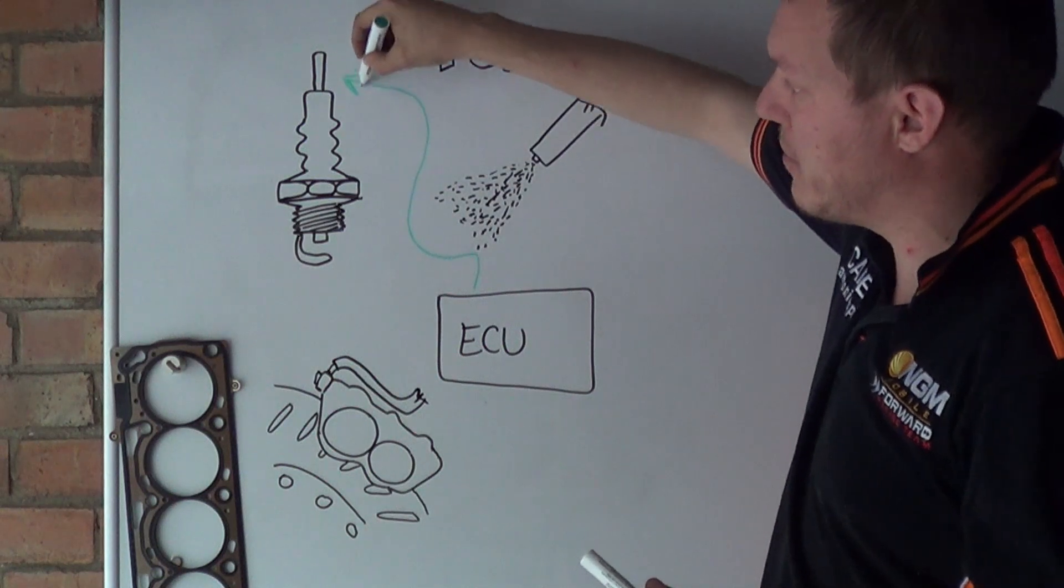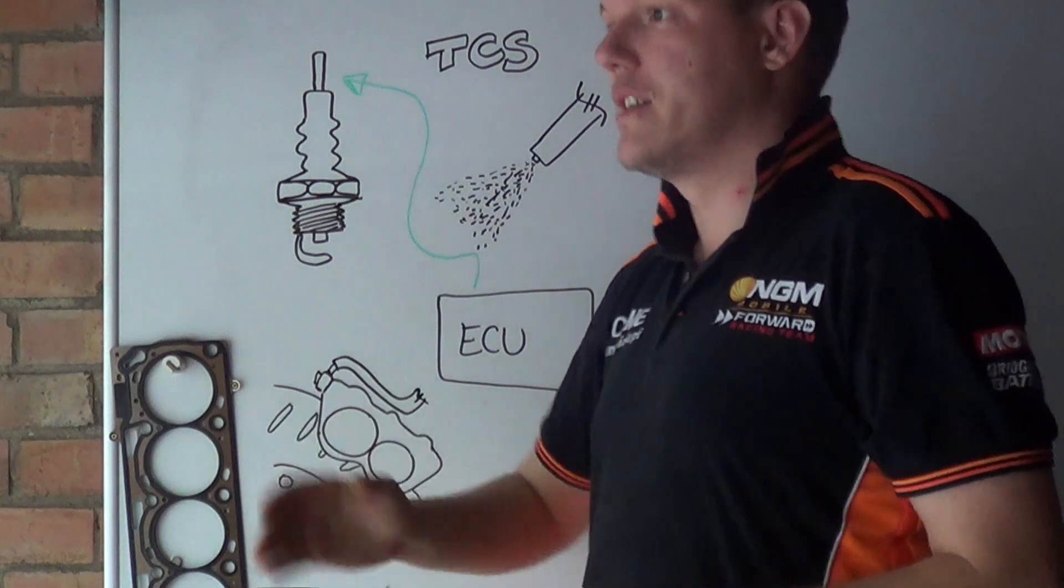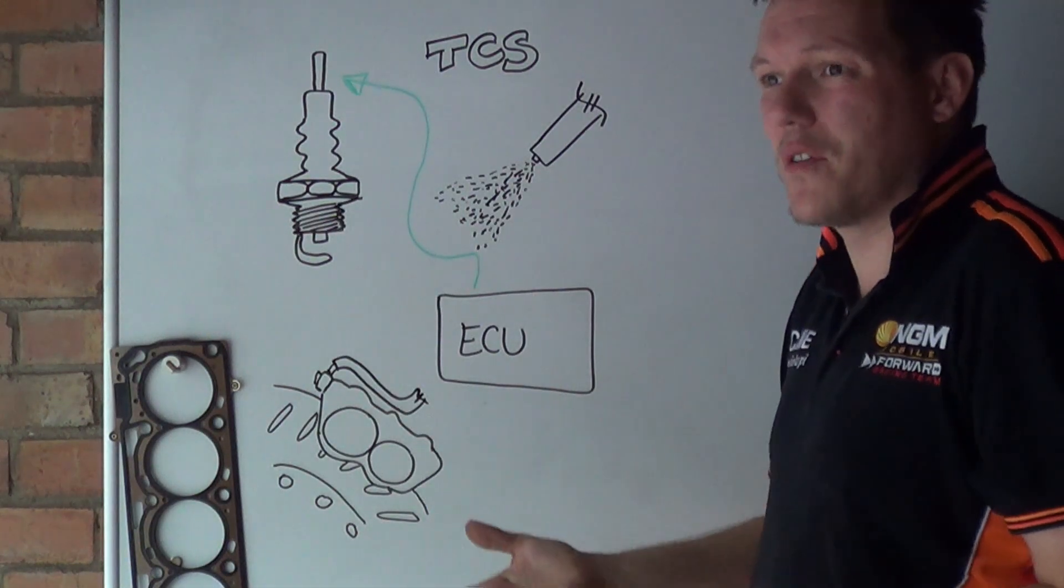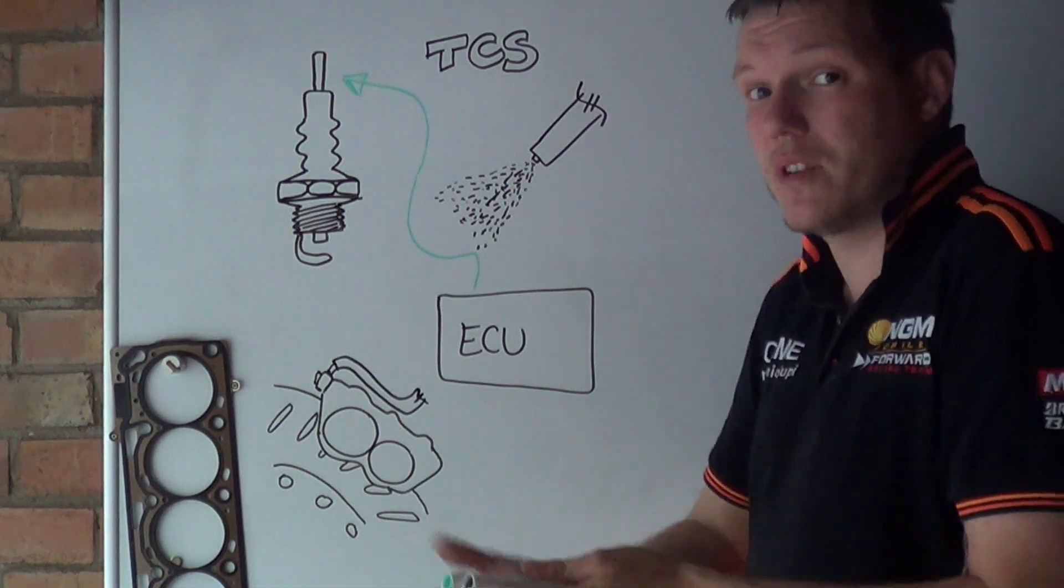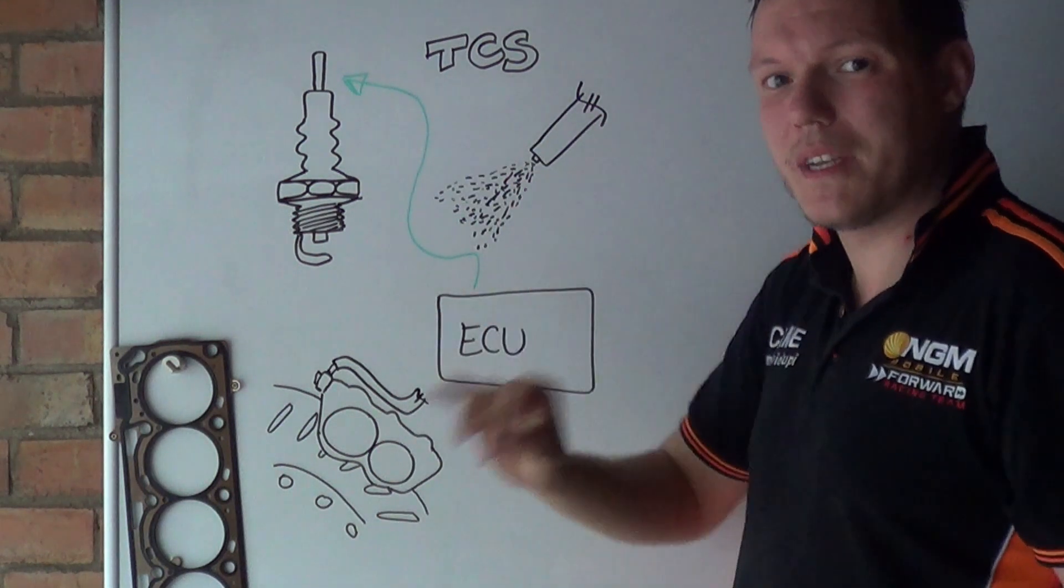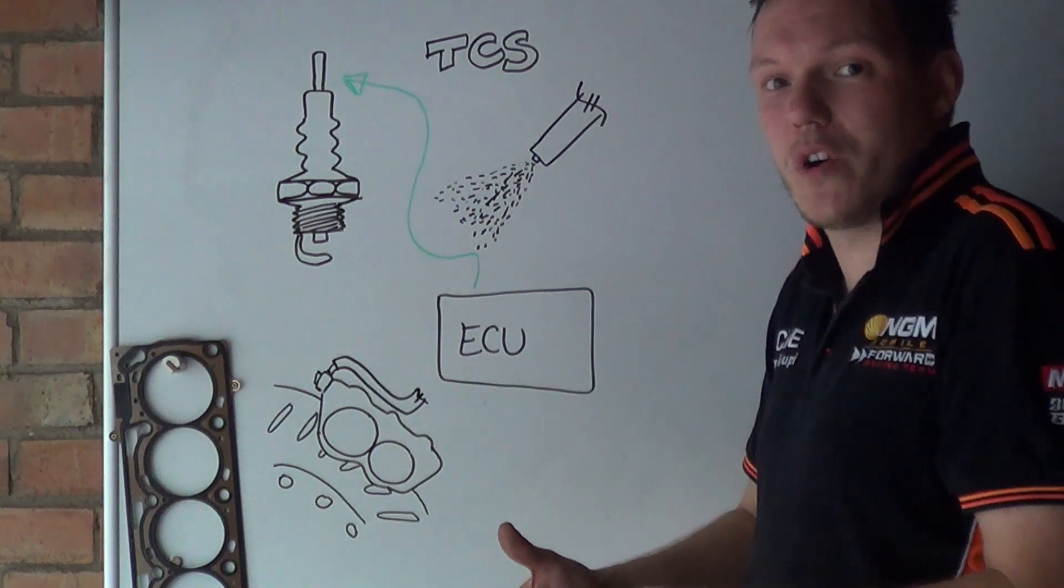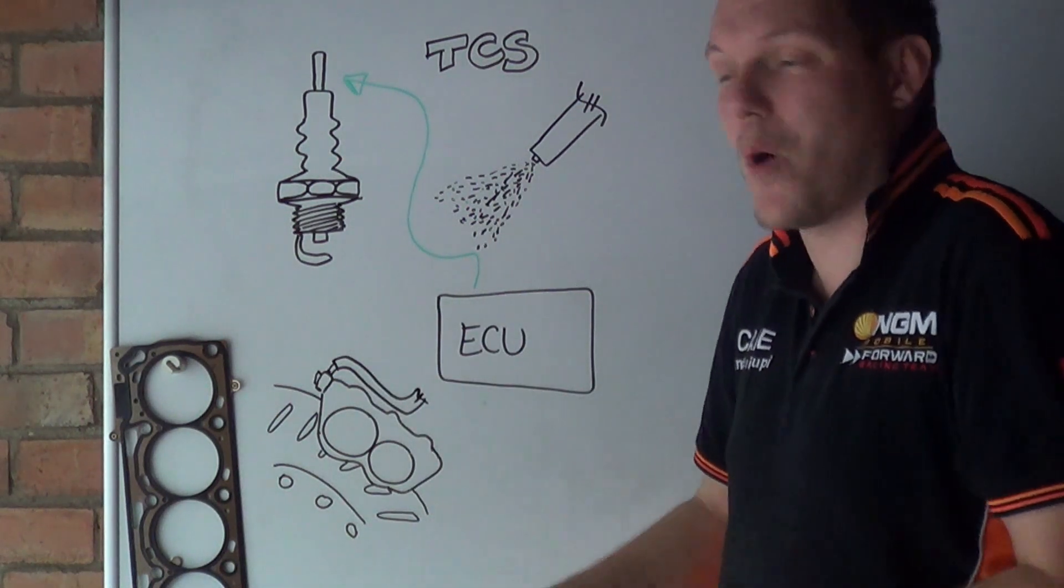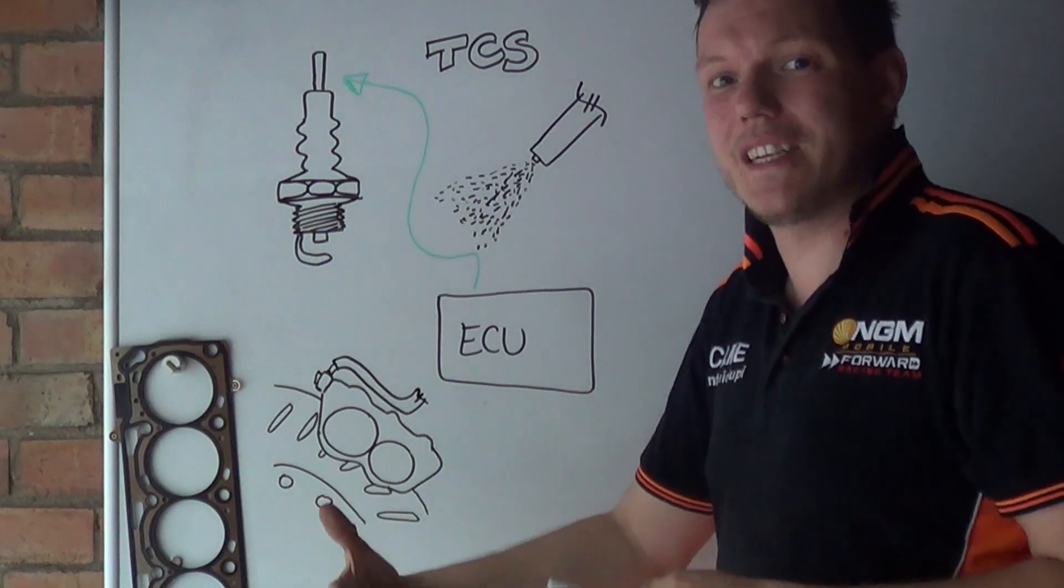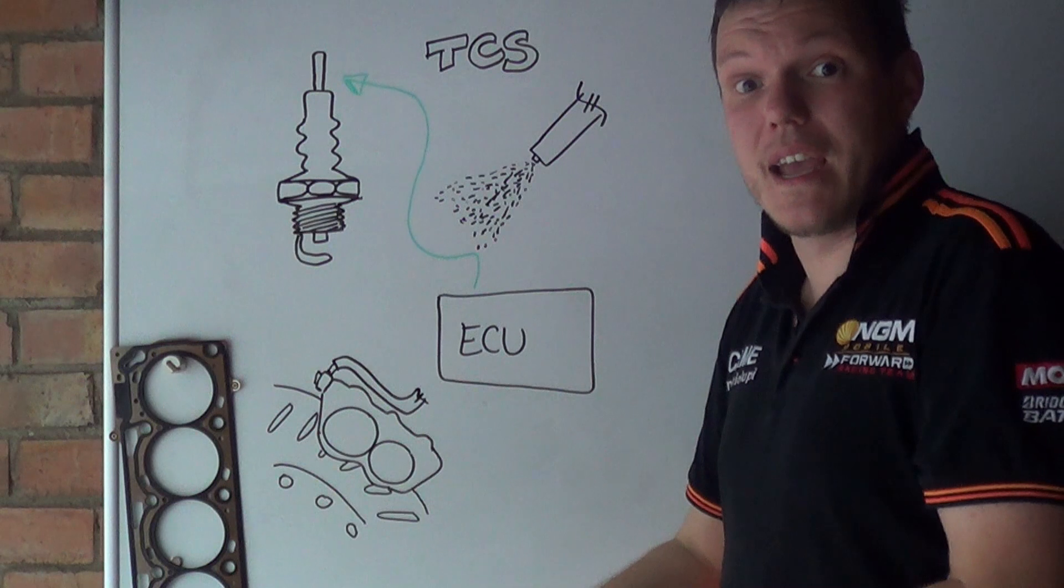The ECU can tell the spark plugs to miss, just misfire two or three strokes. You've got to remember if you're doing six thousand, seven thousand RPM because you're accelerating, it can tell the spark plug to miss a couple of beats. This instantly lowers the torque - well, it cuts the torque production full stop - which means that the bike automatically starts to slow down and the tires have time to regain traction.